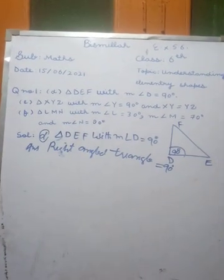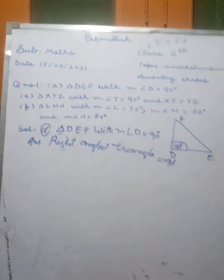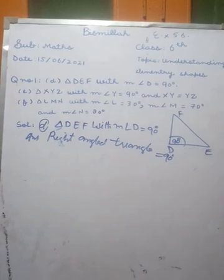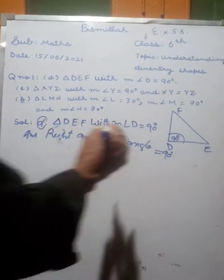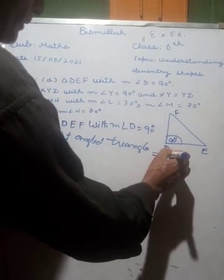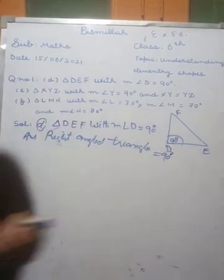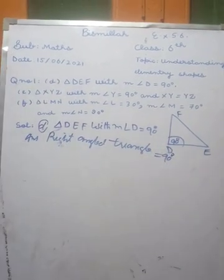A triangle in which one angle is equal to 90 degrees — yahan pa hain — 90 degrees is called a right-angled triangle.